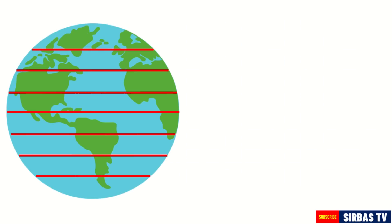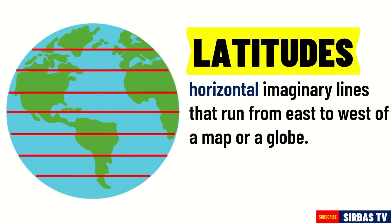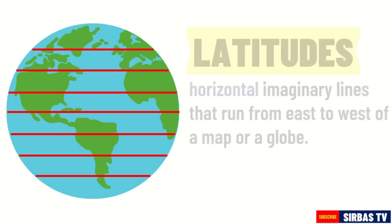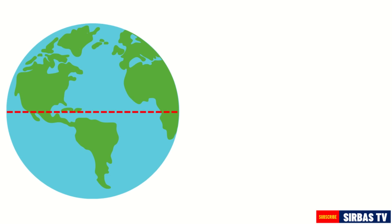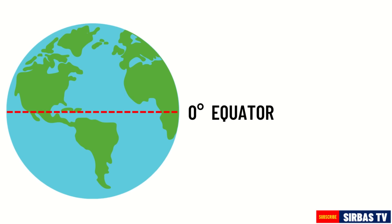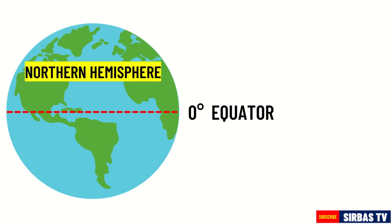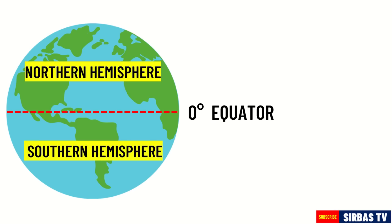The horizontal imaginary lines that run from east to west of a map or a globe are called latitudes. Since the Earth is a sphere, the distance of any place on the globe is measured in degrees. The starting line of latitude measurement is the equator. Therefore, the equator is assigned a latitude value of zero degrees. The equator is read as zero degree latitude.